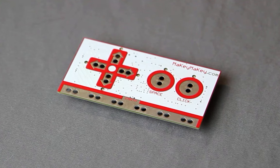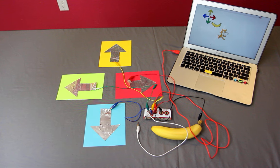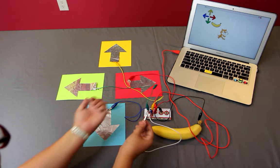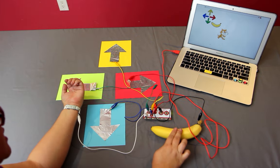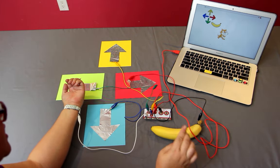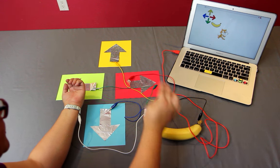Today we're going to introduce the Makey Makey, one of our favorite tools for exploring circuitry. Makey Makey is an invention kit that lets you turn everyday objects into keys for your computer. It was co-invented by Eric Rosenbaum and Jay Silver, who were students together at the MIT Media Lab's lifelong kindergarten group.